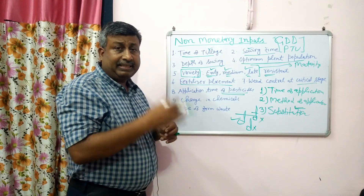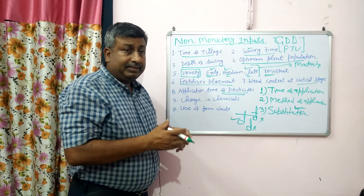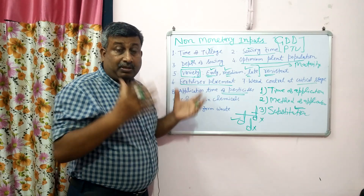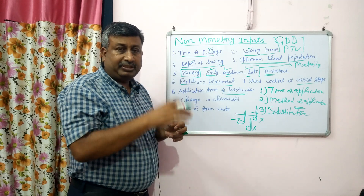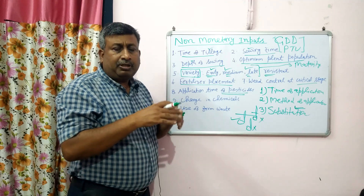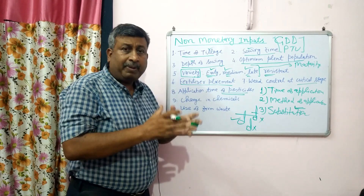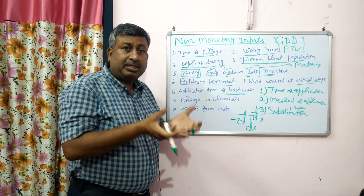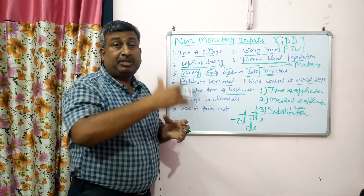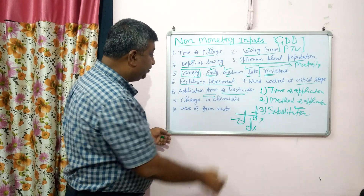Then time of application of pesticides — whether insecticides, herbicides, or fungicides. Apply when there is a surge or population of the pest. If there is a burst of disease or insects and we apply after it has already exploded, we cannot check it. If we apply at the economic threshold level, we get the full advantage. That's why time of application of pesticides is very important.